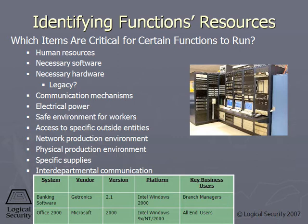That's when some companies make the move to off-the-shelf software or hardware that vendors can replace for them. Other resources include power — you need some type of backup power — the ability to communicate with outside entities like customers, partners, and shareholders, supplies that individuals would need, and inter-department communication. There still needs to be communication between the critical functions, so you figure out what resources each one needs in order to ensure proper backups for all those resources.